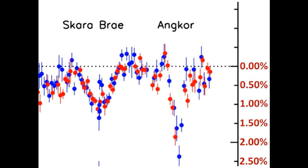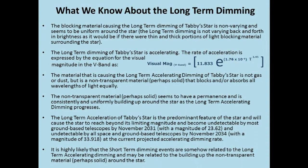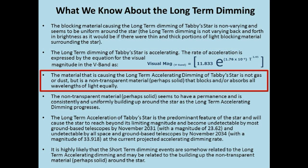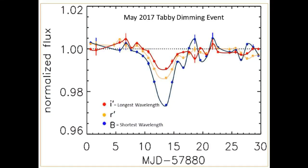For our second topic, we will update you with additional data to further back up our earlier conclusion that the material causing the long-term accelerating dimming of Tabby's Star is not gas or dust, but is a non-transparent material, perhaps solid, that blocks and/or absorbs all wavelengths of light equally. As a refresher, this is a graph we've shown before.